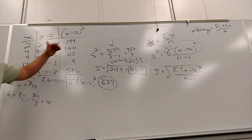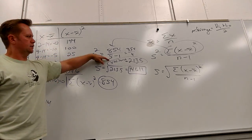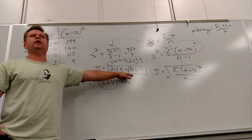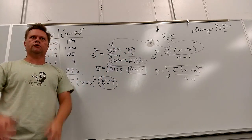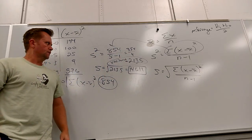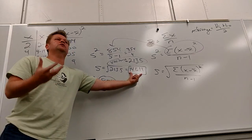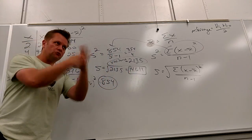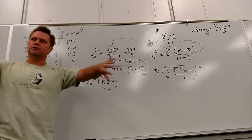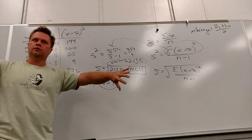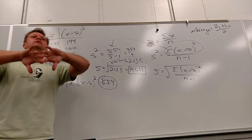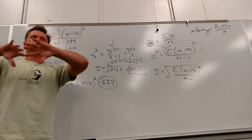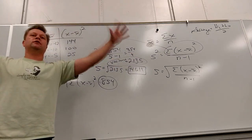When I ask you to find the variance and the standard deviation, what's nice is you've got to find the variance to get there anyway — you've got to find both of them as you're working through it. I desperately want you to understand: the formula was constructed to tell us the average distance from the center.